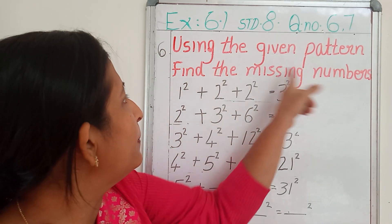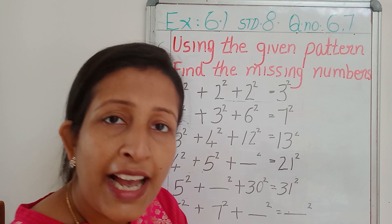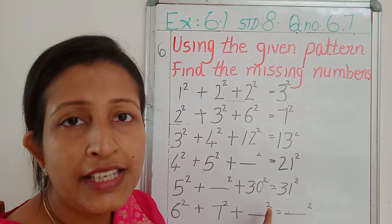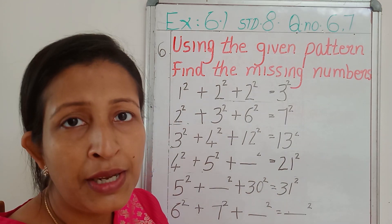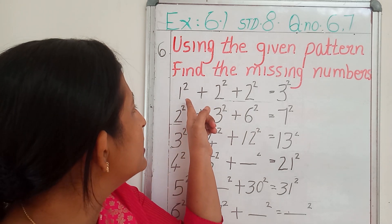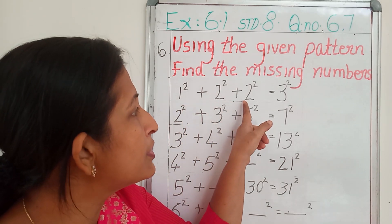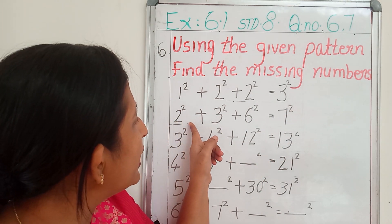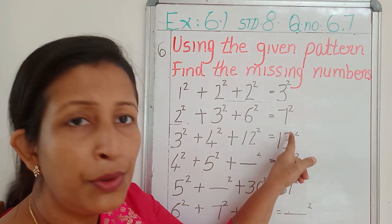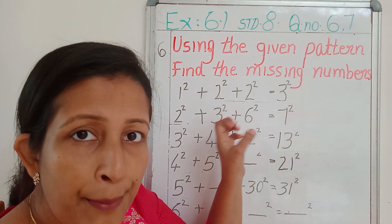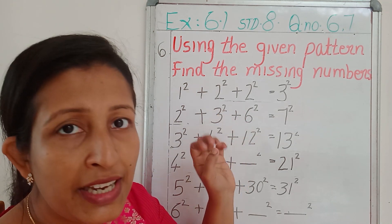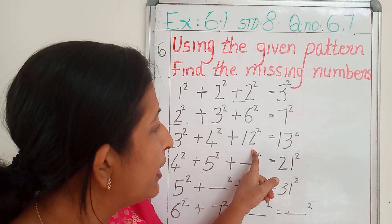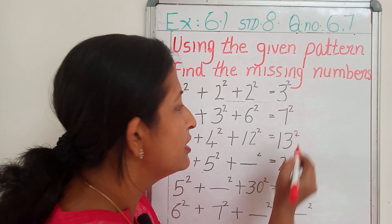Using the given pattern, find the missing numbers. They have given a pattern here, and some numbers are missing in this pattern. So we have to find out the missing numbers. The first statement is: 1 square plus 2 square plus 2 square equals 3 square. Then, 2 square plus 3 square plus 6 square equals 7 square. So just compare all the numbers, then we will get a relationship between these numbers. 3 square plus 4 square plus 12 square equals 13 square.